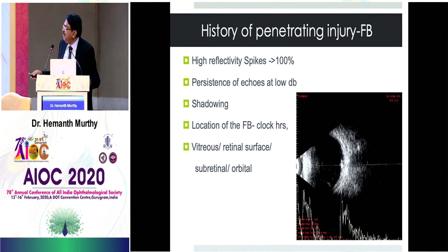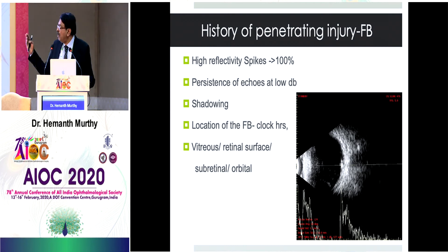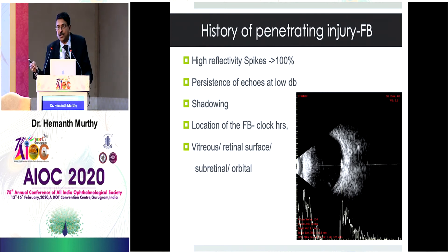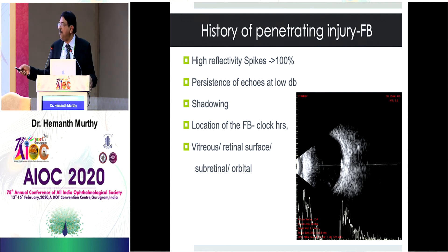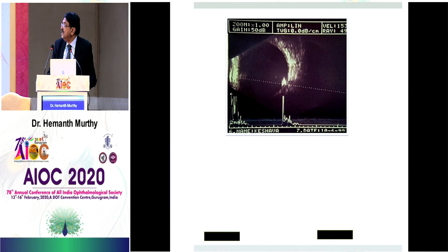Whenever you have penetrating trauma, you can have foreign bodies. A foreign body shows a high reflectivity spike — the impedance is strongest, so almost all the sound gets reflected back. Because very little sound passes through, you get shadowing. You can also locate the foreign body: determine whether it is in the vitreous, on the surface of the retina, under the retina, or in the orbit.